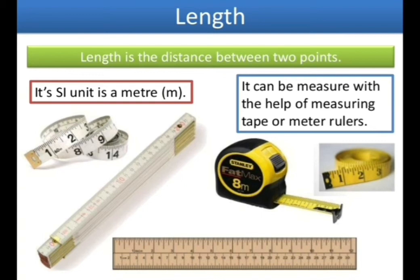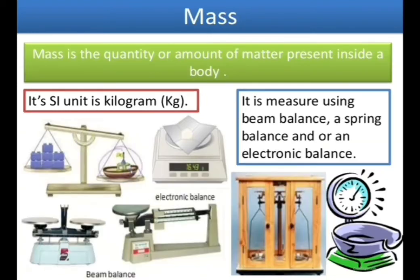Let us talk about our first physical quantity: length. Length is the distance between two points. Length is measured in meter, and the SI unit of length is meter. The symbol for meter is small m. Length can be measured with the help of a measuring tape and metric ruler.